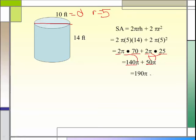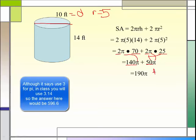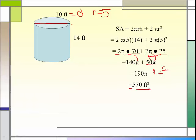So if it said to leave it in terms of π, it would be this. And if it asked you for an estimate or a final answer, you would multiply 190 times 3. And you would have gotten that. How did you do? Excellent.